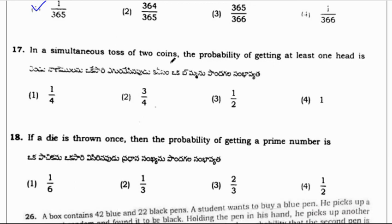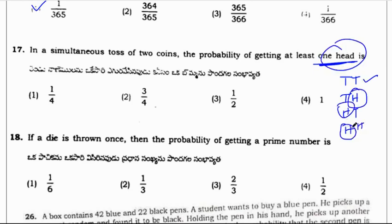In a simultaneous toss of two coins, the probability of getting at least one head. So at least one head, first we find the total possible outcomes. Two coins toss, the outcomes will be tails tails, head tail, tail head, and head head. So at least one head, one, two, three. So favorable outcomes are three. Total possible outcomes are four. So three by four is the answer.